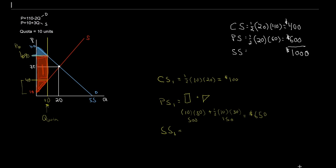Social surplus is just the surplus earned by all agents acting in this market. In this scenario we just have consumers and producers, so 100 plus 650 gives me $750 of total social surplus. What happened to that loss? The difference of 250 is my deadweight loss. That deadweight loss shows up as the brown triangle in our diagram — the portion of consumer and producer surplus that used to be realized but is now lost altogether due to the implementation of this policy. We had an allocatively efficient market at a price of 70 and quantity of 20. We interfered — we put in this quota — and now we have an inefficient outcome, a loss of surplus altogether.